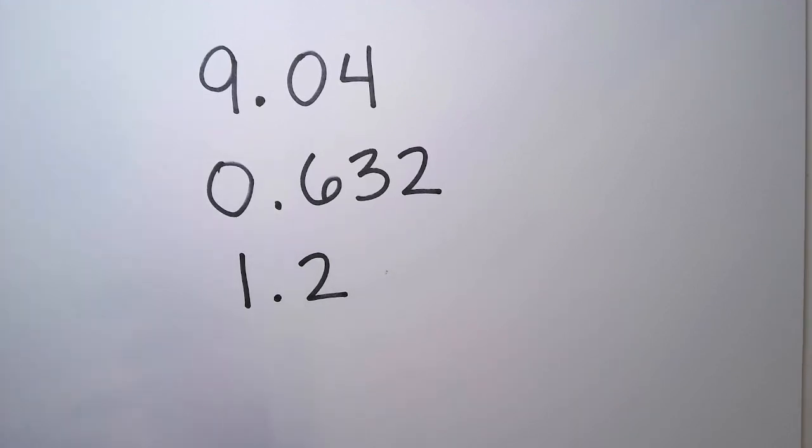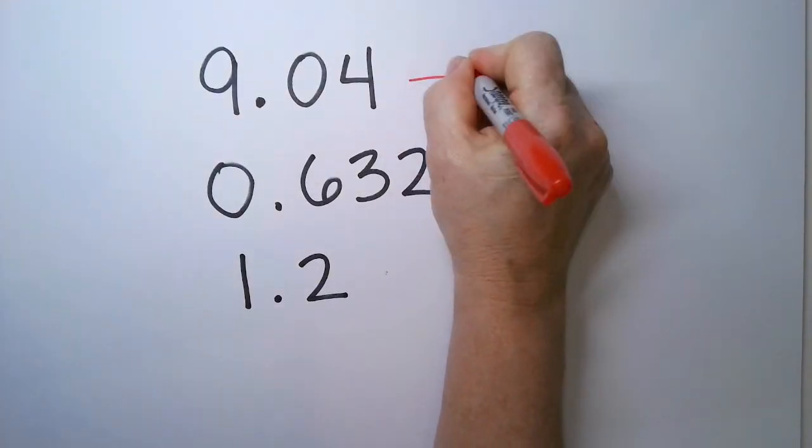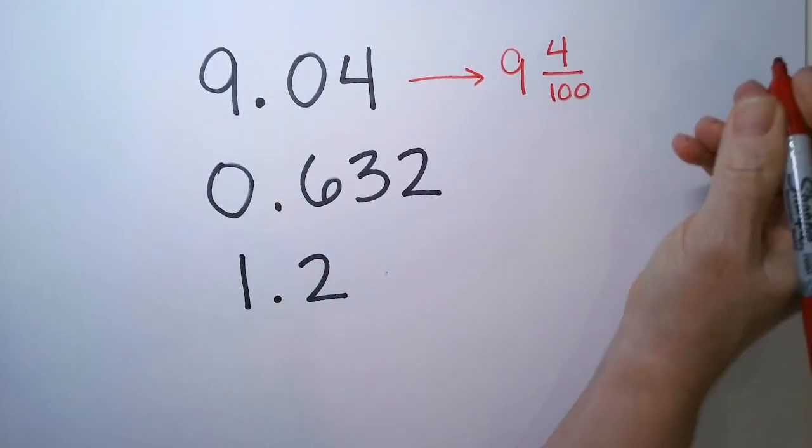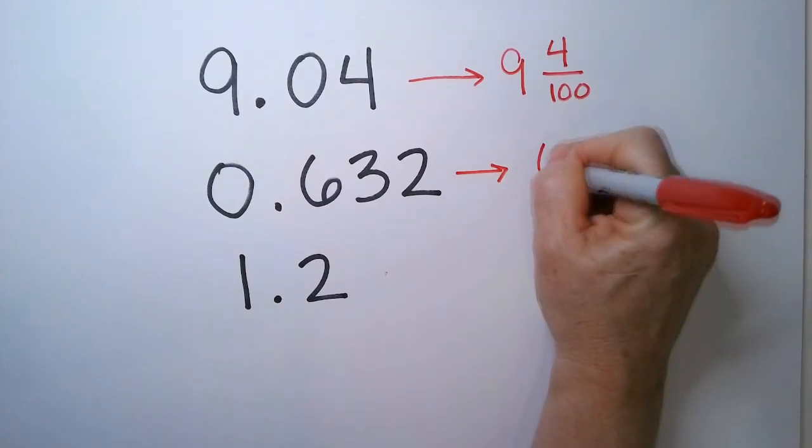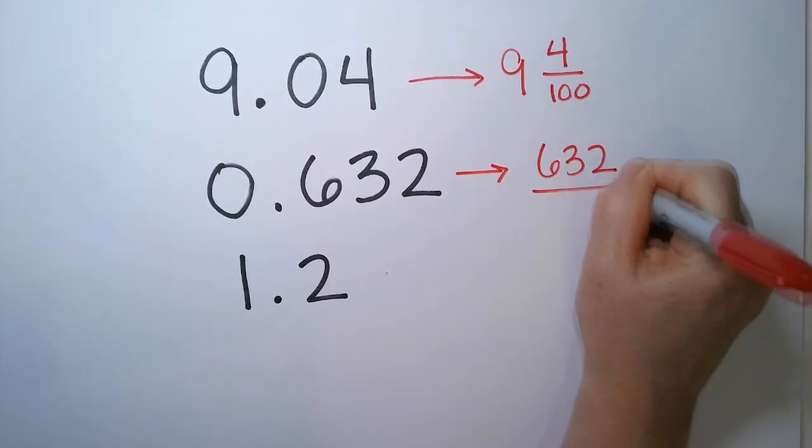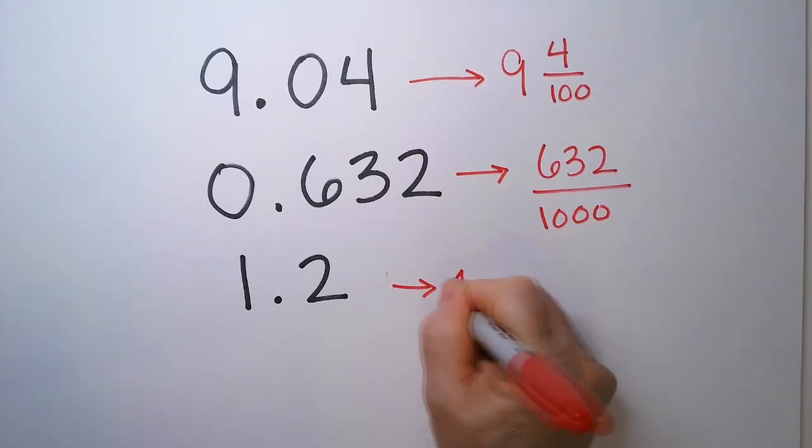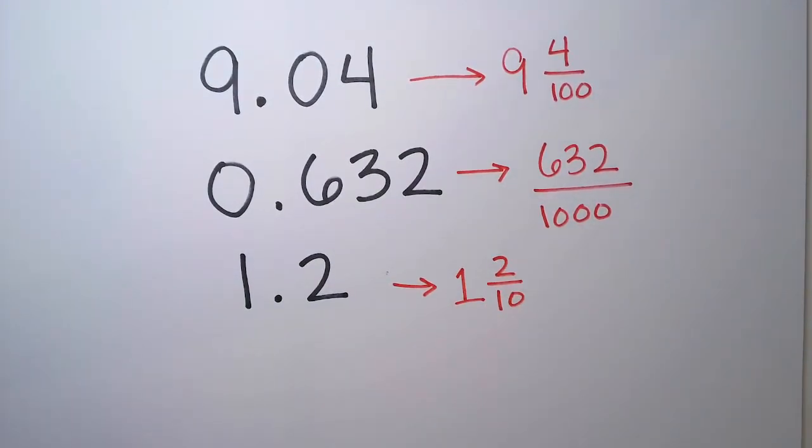Start. This one is 9 and 4 hundredths. This one is 632 thousandths. This one is 1 and 2 tenths.